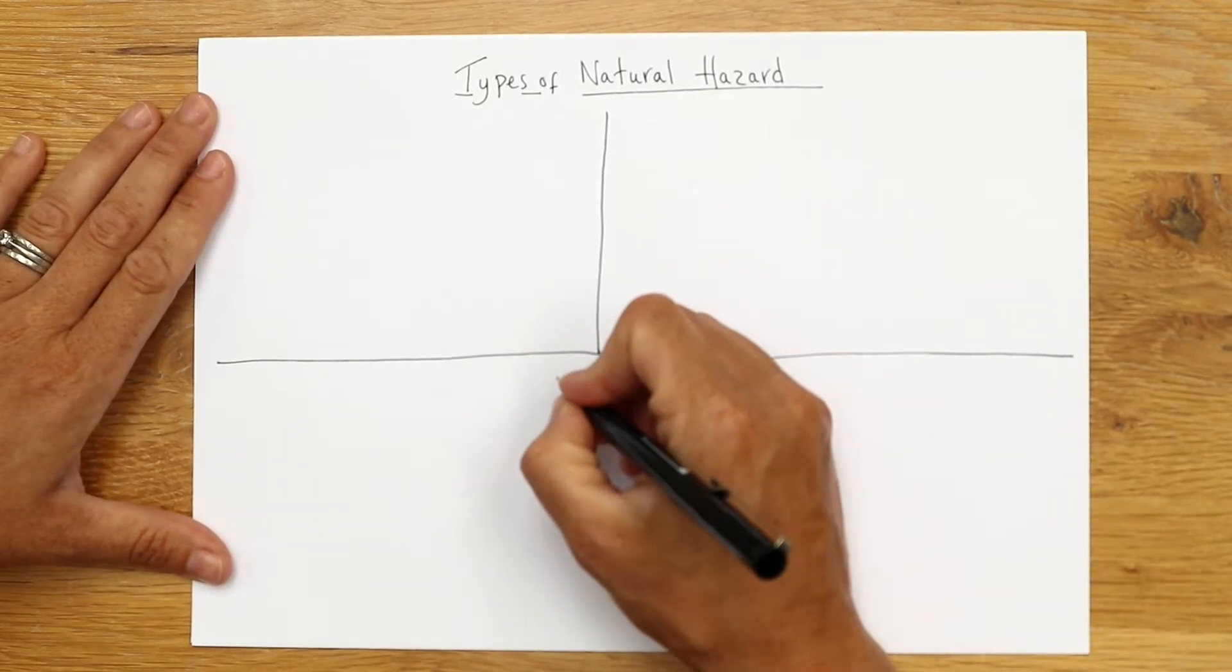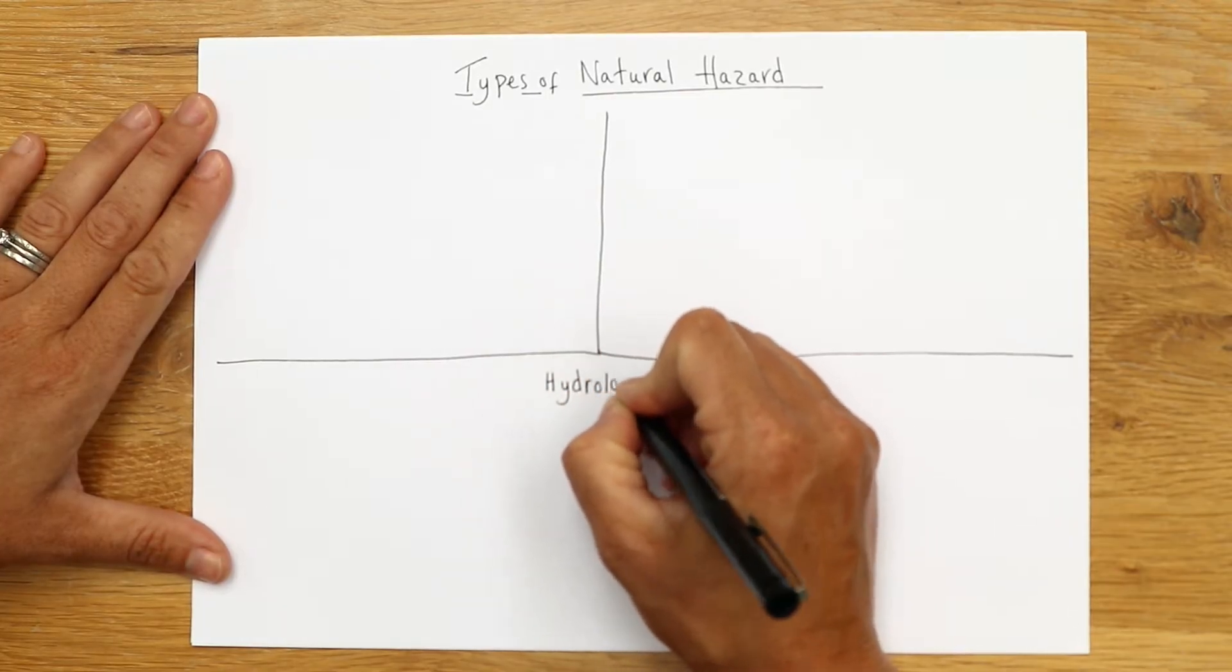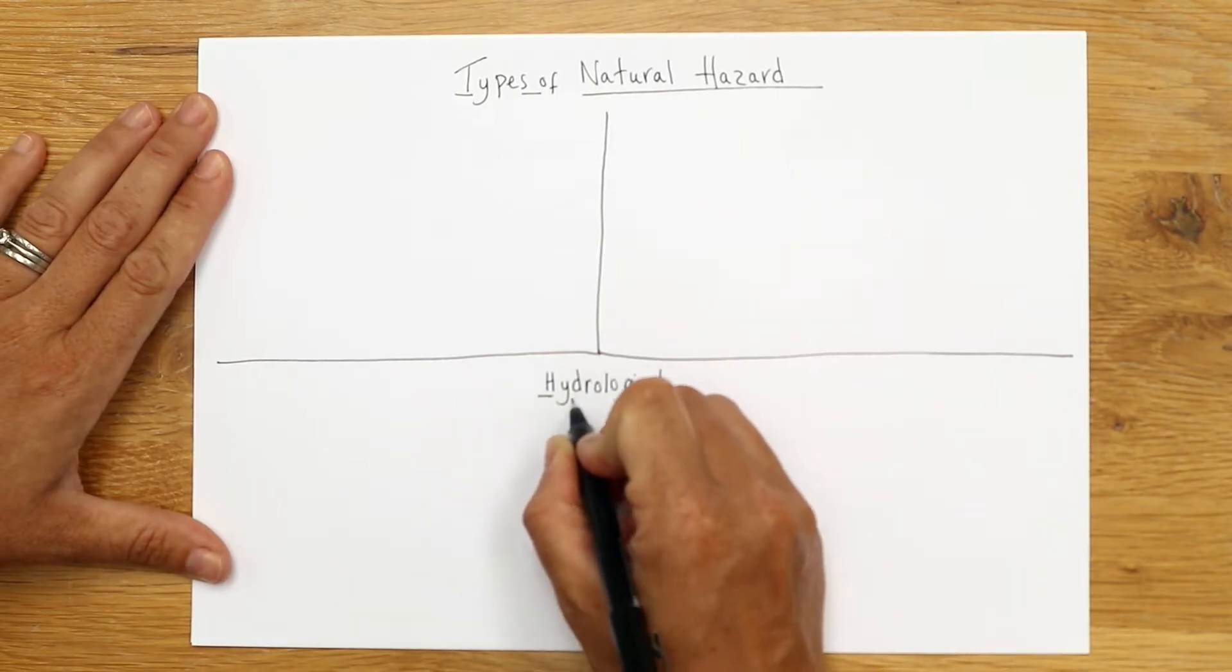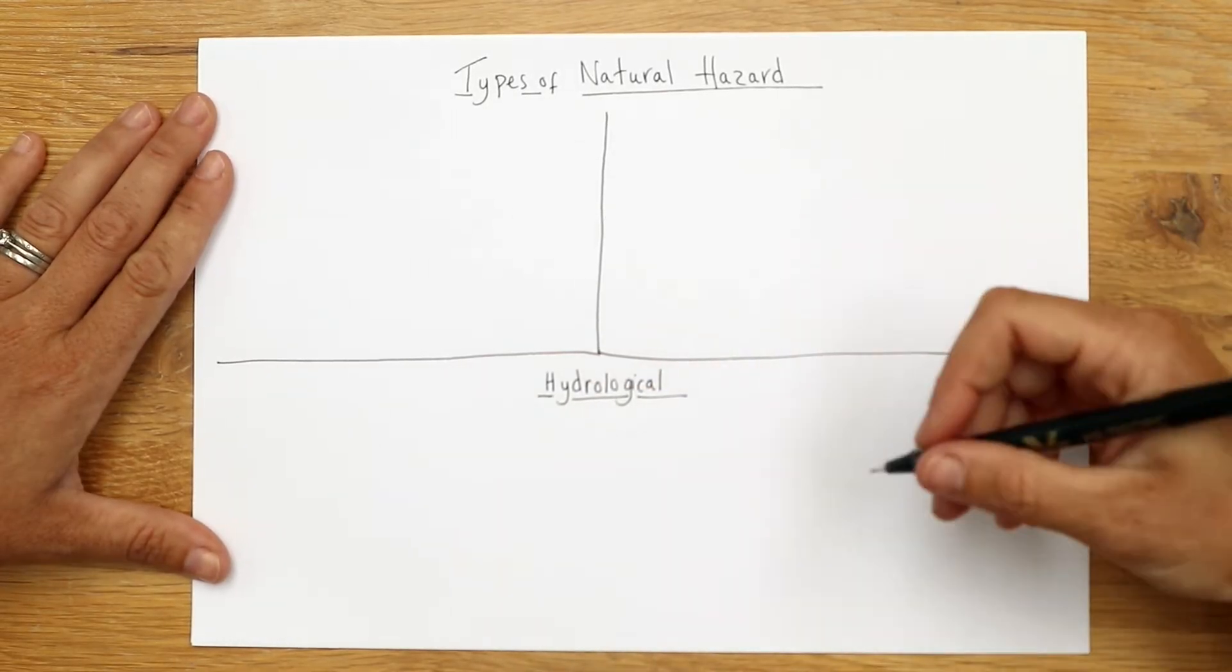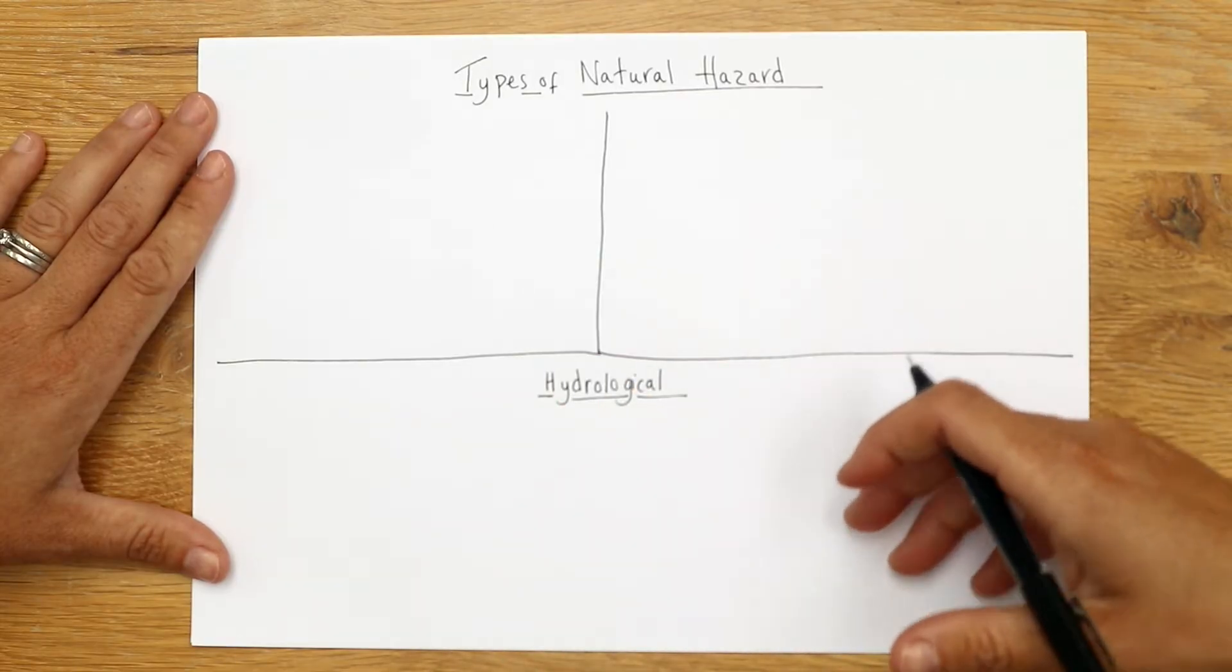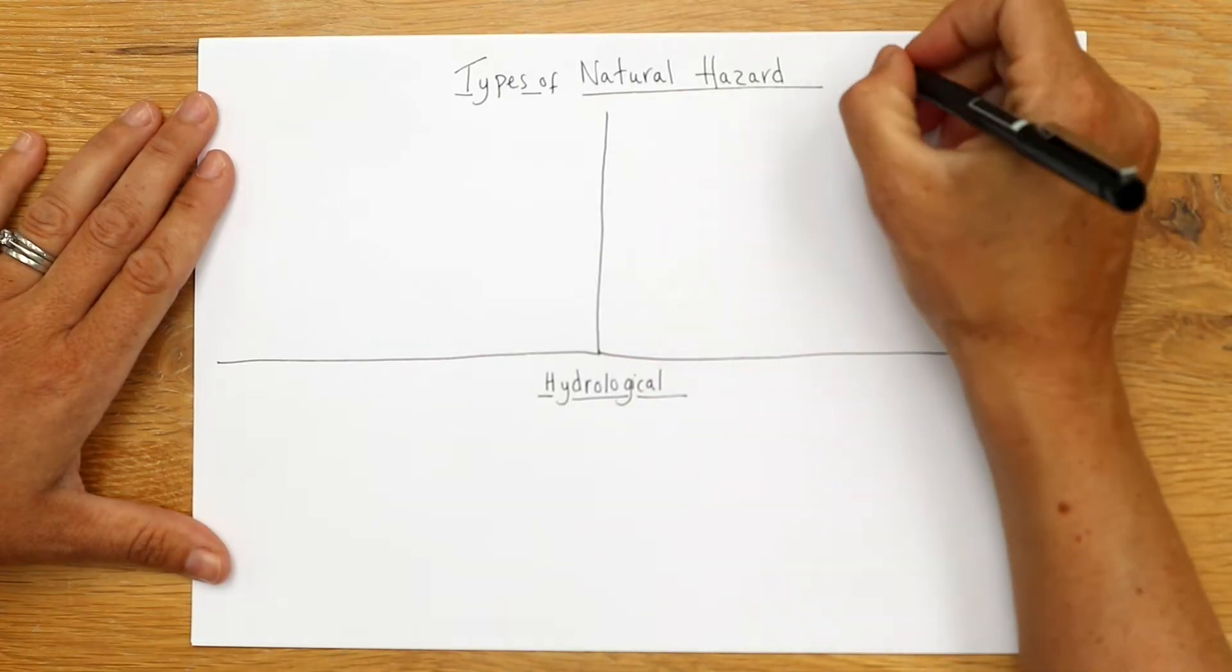Okay, so the first one we're going to look at is hydrological. Hydro means water, so these are some water hazards, things like flooding, storm surges and avalanches. So we're going to put those in there. We'll just title this one for us quickly.